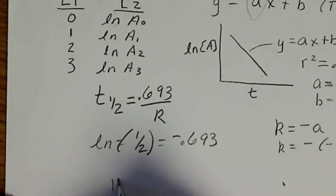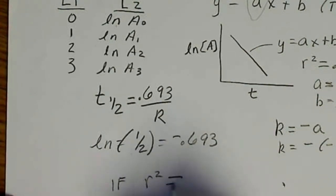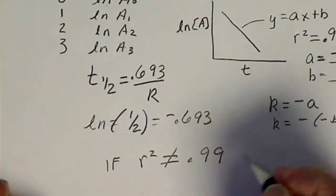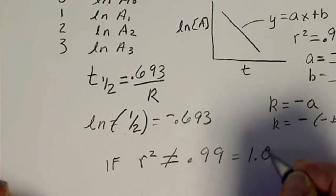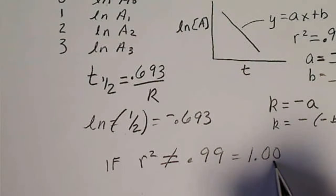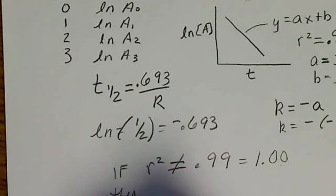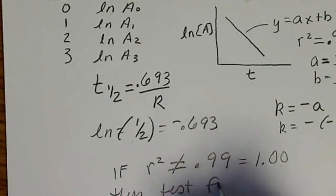If we get R squared, if R squared is not equal to 0.99 or better, it could actually equal 1, that would be perfect data, that means every point would actually be on the line. And then we'll test for 2nd order.